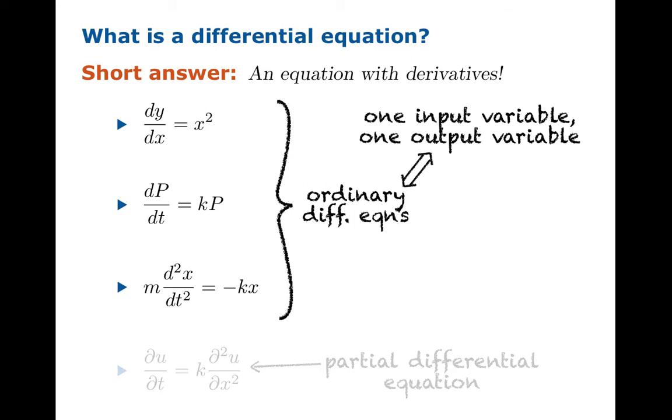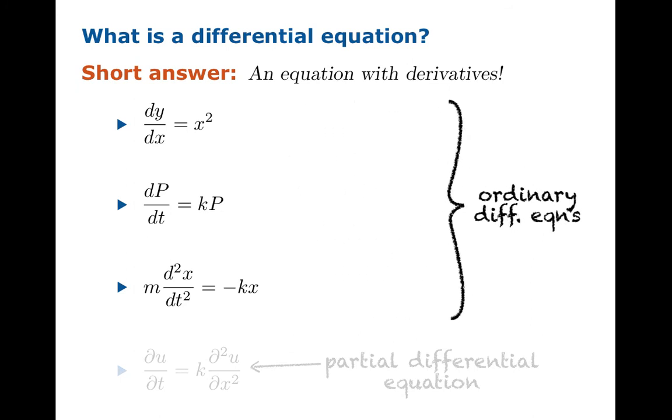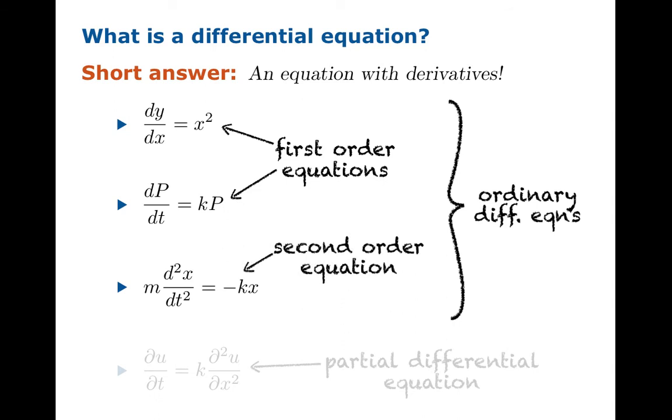We're going to concentrate on the ordinary equations. And among these, we can have a little bit of a classification according to what order derivative we're looking at. So the first two examples are first-order equations because we're just taking the first derivative. The next example is actually a second-order equation because the second derivative shows up. You might be able to imagine what a third or fourth or fifth-order equation looks like.